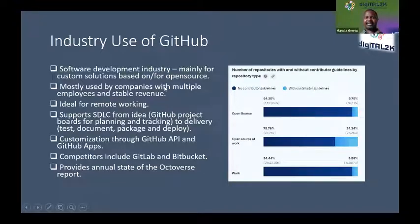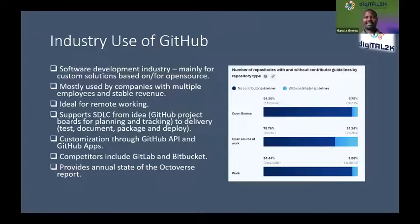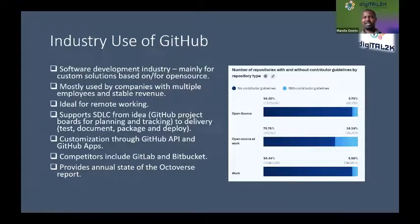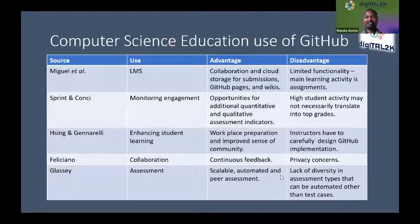GitHub does some self-reflection through an annual report called the State of the Octoverse. From their 2021 report, they analyzed the use of documentation within different repositories. The insight shows that generally, people are not putting guidelines — they're just going straight into coding. From a teaching perspective, this suggests that many people coming out of universities have been well grounded in the practice of documentation.